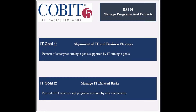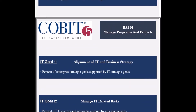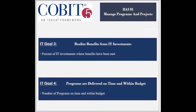The second goal supported is to manage the IT-related business risks. Its achievement is measured by the percent of IT services covered by risk assessments, and by the percent of enterprise risk assessments including IT-related risks. The third goal supported by this process is to realize the benefits from the IT investments. Its achievement is measured by the percent of IT services with realized benefits, and by the percent of IT investments where benefits have been met.